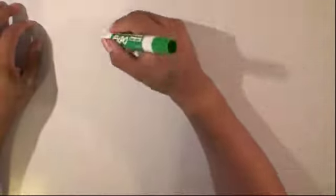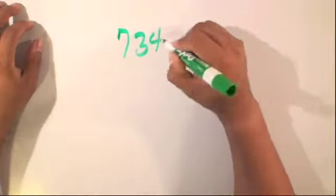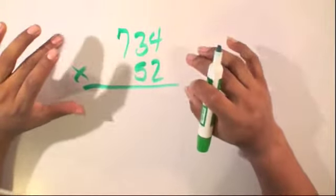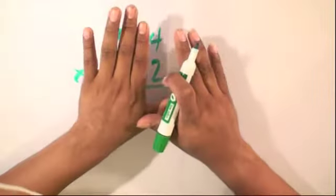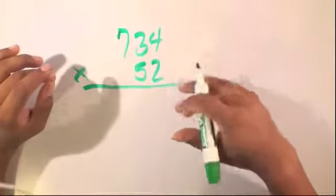Now we're going to take a look at a complex multiplication problem. Let's have, for example, 734 times 52. Again, the way this is set up, we have like terms combined with each other. We have the ones, the tens, and the hundreds all stacked on top of each other.